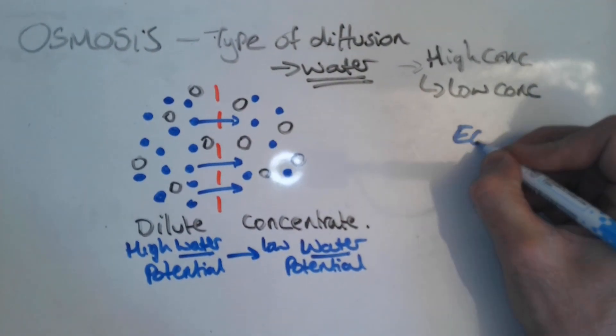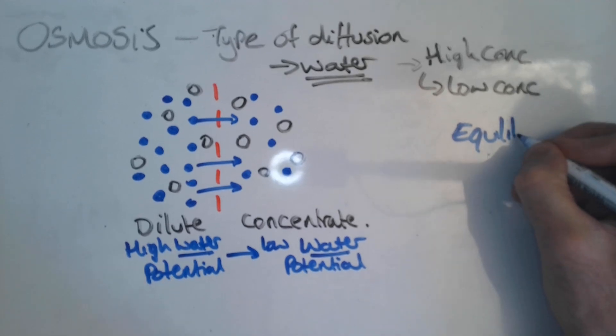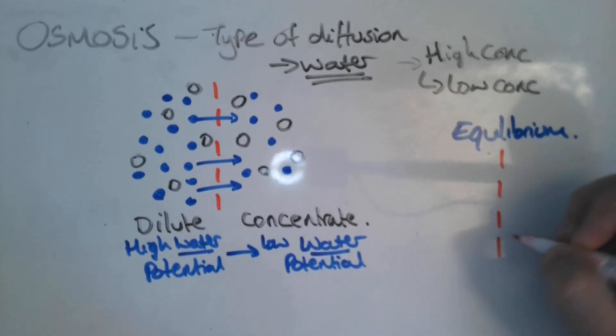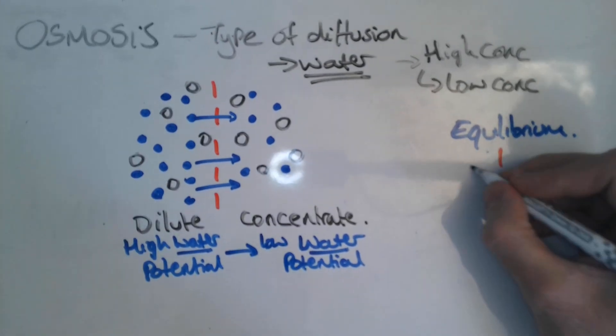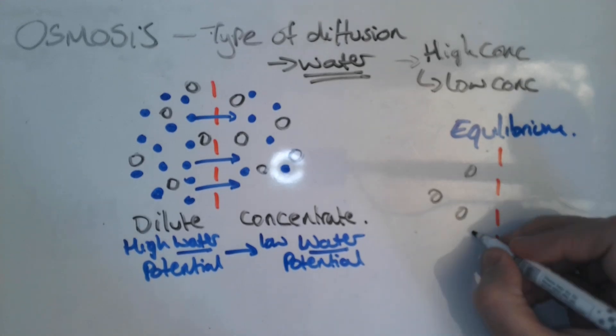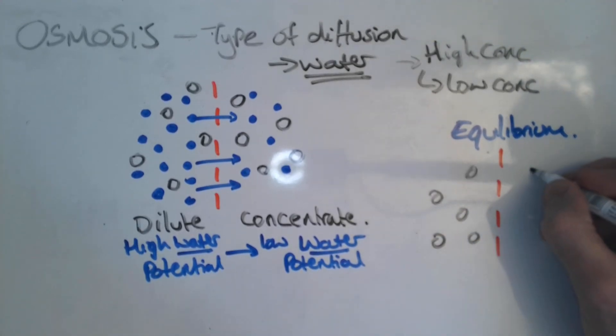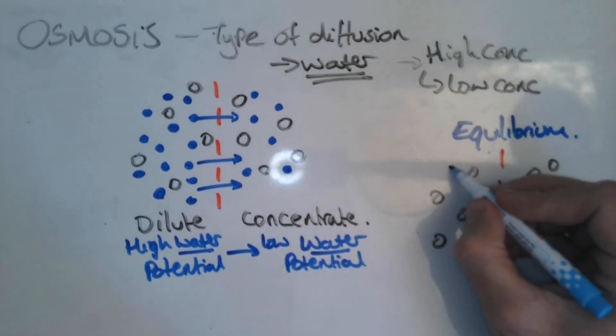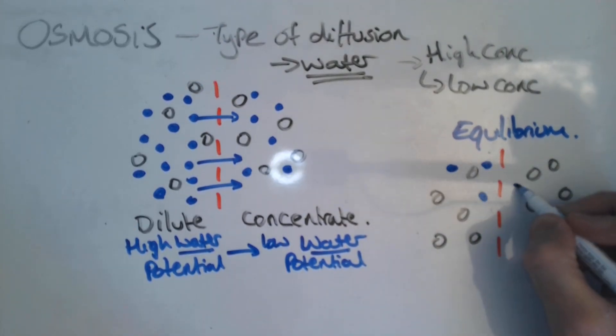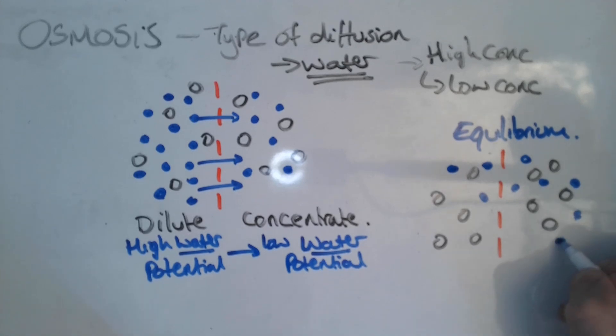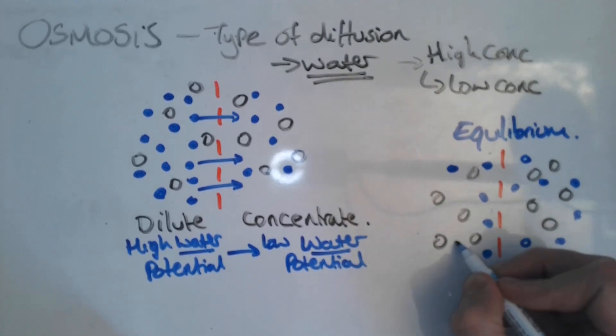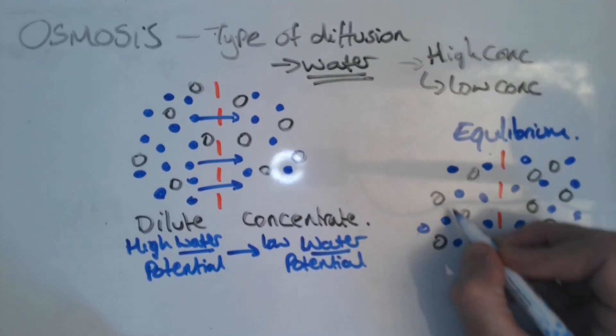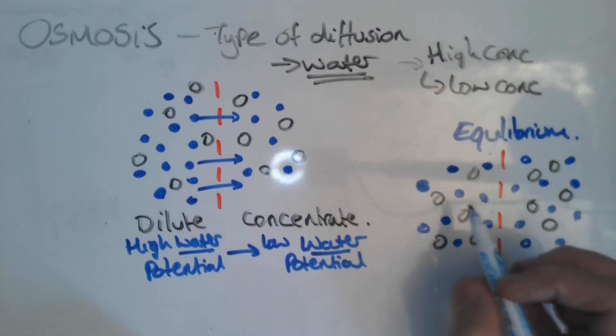So when we reach equilibrium, we'll still have a partially permeable membrane, we'll still have the same number of solutes on either side because these are too large to diffuse through our partially permeable membrane. But what you'll find is that you would have an equal amount of water on either side of the membrane.